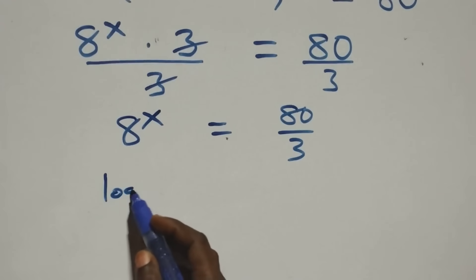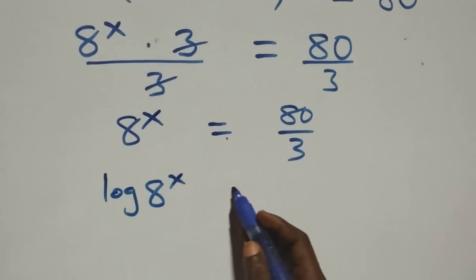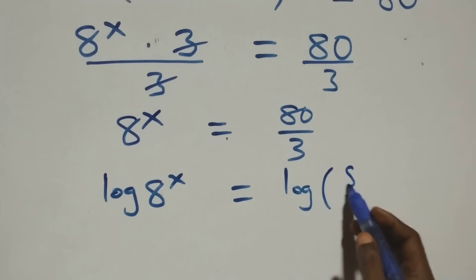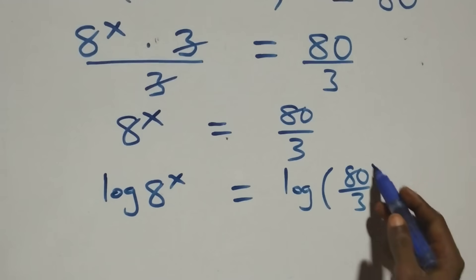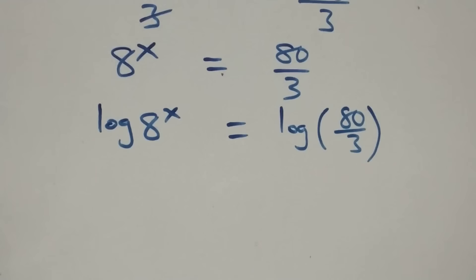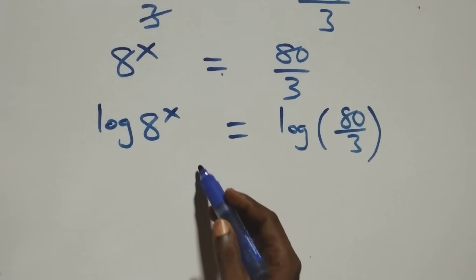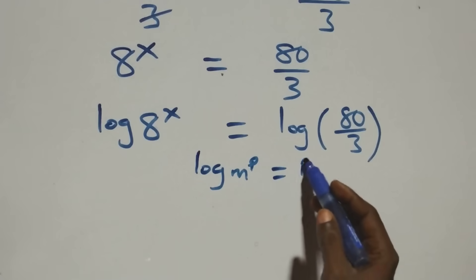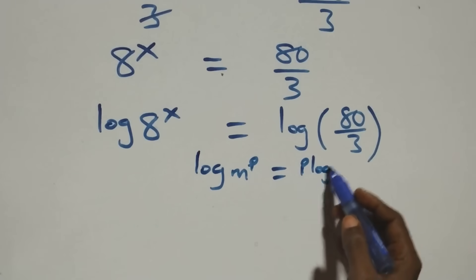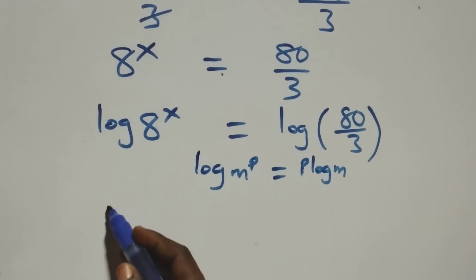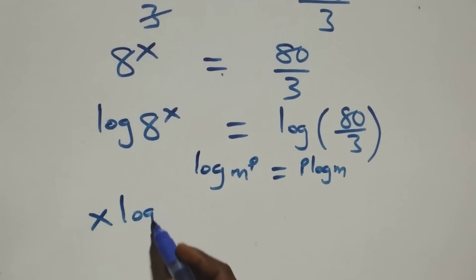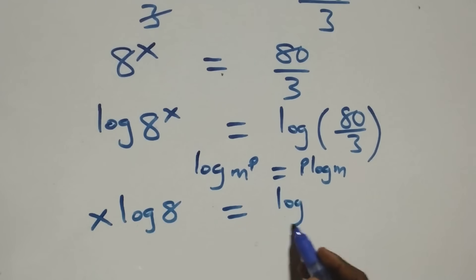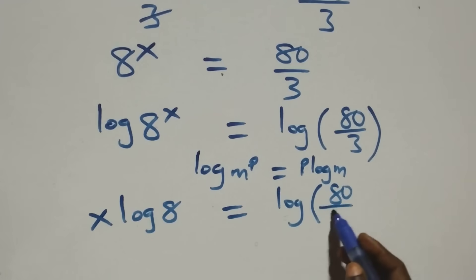The next step: we take the log on both sides. That is, we have log of a raised to power x equals log of 80 over 3. Here we apply the power rule of logarithms: log m raised to power p is the same as p·log m. So all we have becomes x·log 8 equals log(80/3).